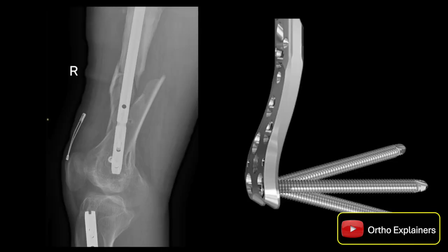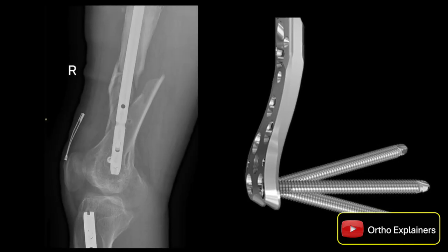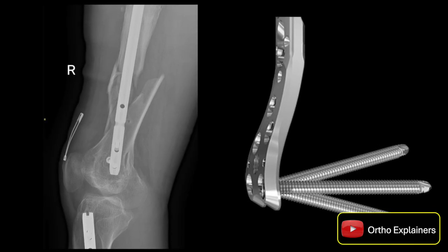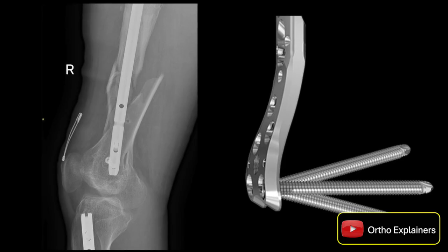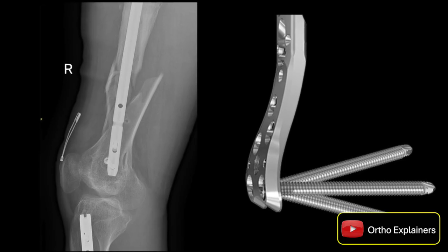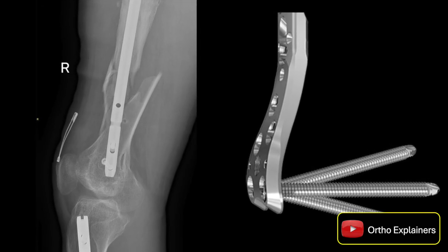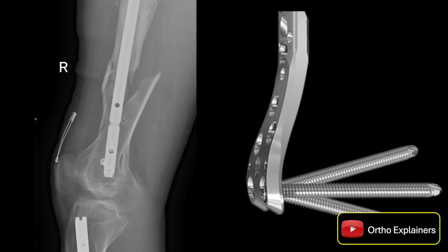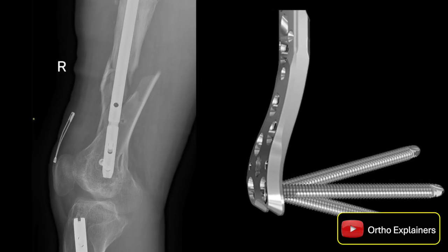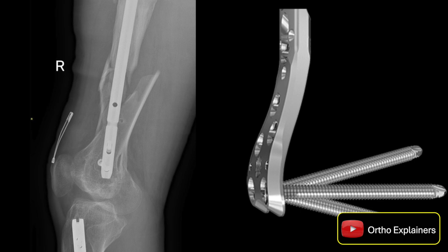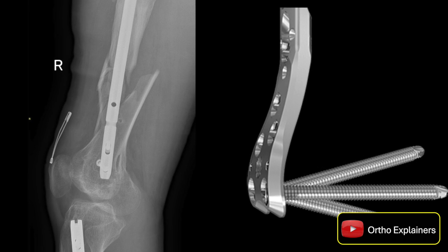Let's start with a situation many of us have faced. You're in the OR dealing with a periprosthetic fracture around a well-fixed titanium intramedullary nail, and the only plating you have available is stainless steel. What's the right call?